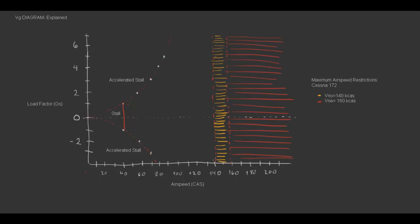In yellow, we have the range in which we can get structural damage, and in the red, we have structural failure.